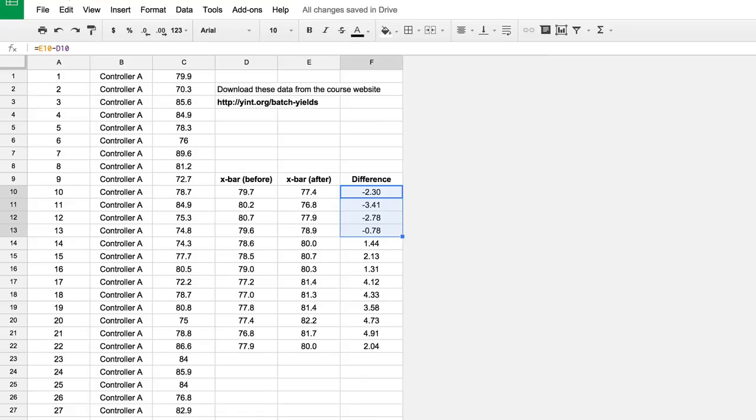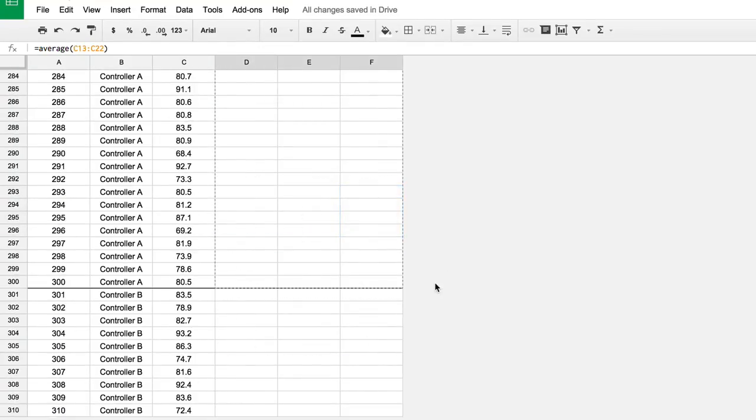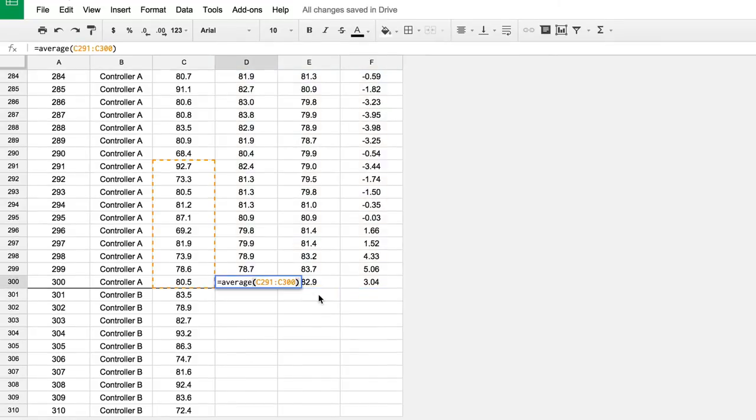Now, if I copy this formula to the very last set of data, where the last 10 numbers are from the new controller, we see the calculations being done where the actual difference occurred. All the prior differences were from the situation where there really wasn't a difference.